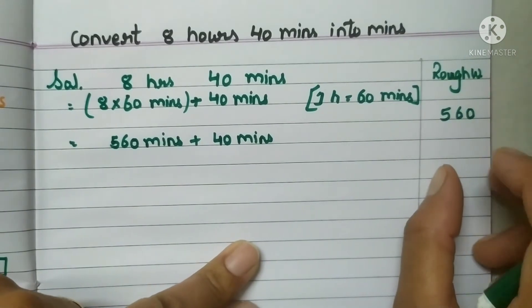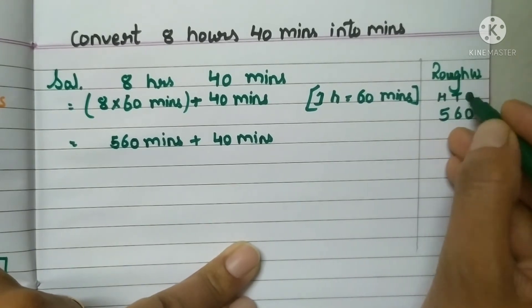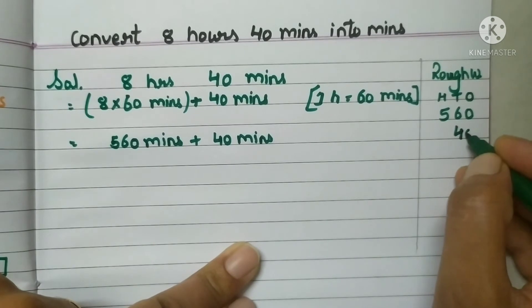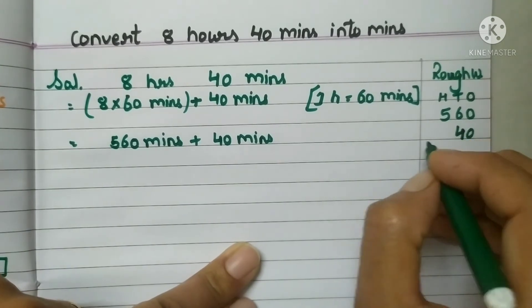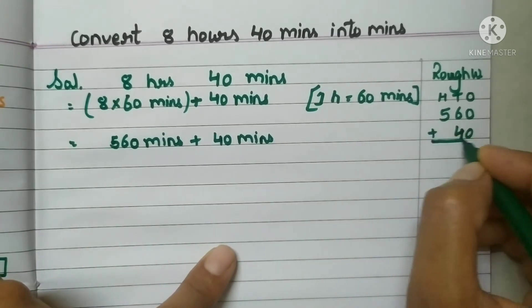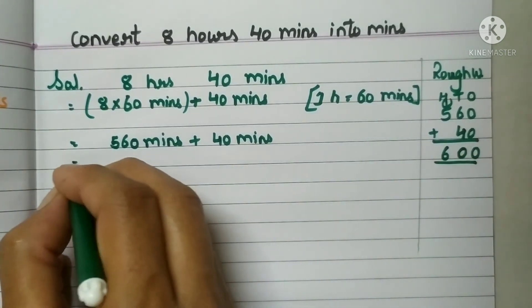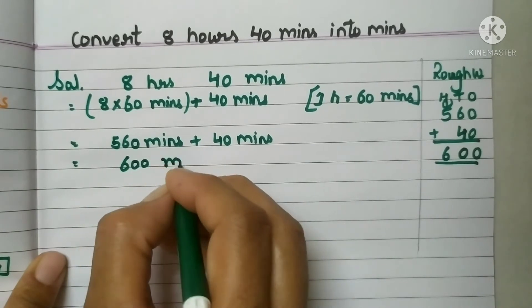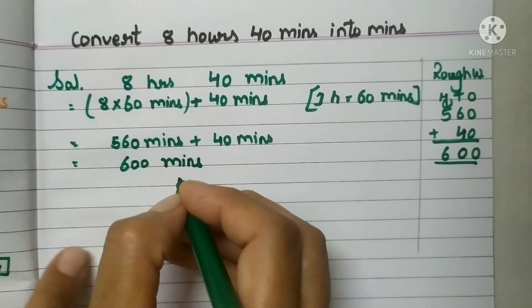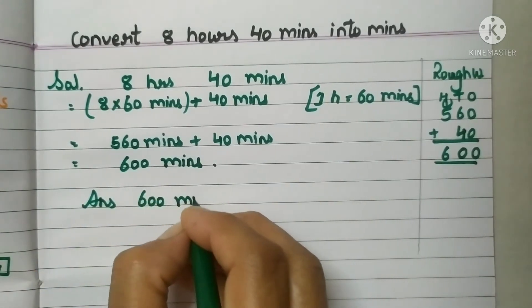It's 100, 10, 1. And we have to add 40. So it is 4 and 0. Don't write in an incorrect manner, incorrect place, then your answer will be wrong. 0 plus 0 is 0, 6 plus 4 is 10, and 1 carry. 5 plus 1 is 6. So we got an answer of 600 minutes. 600 minutes. So we will write this answer 600 minutes.